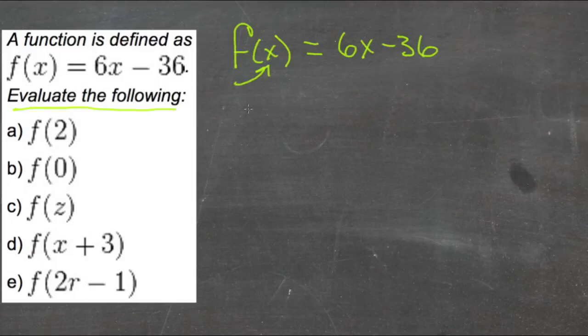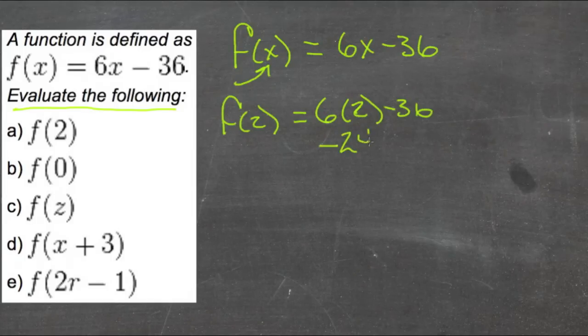So first we have f of 2. So f of 2, if f of x is 6x minus 36, then f of 2 would be 6 times 2 minus 36. 6 times 2 is 12 minus 36 is negative 24.